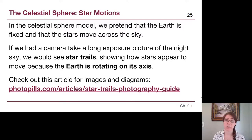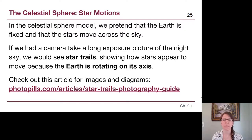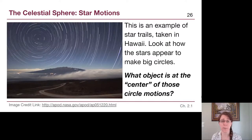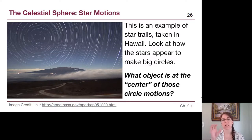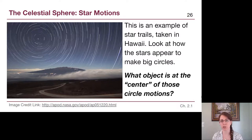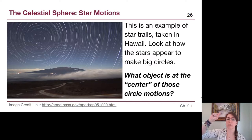Looking up images of star trails is a great way to see some of these motions. This image — an Astronomy Picture of the Day taken in Hawaii in the northern hemisphere — is an example of star trails representing stars' motion over the course of several hours on a single night. Each long line is a single star: where it started, where it was at all points in between, and where it ended for the frame of time the astronomer took the picture.